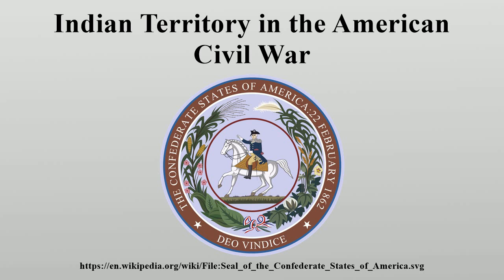Before the outbreak of war, the United States government relocated all soldiers in Indian Territory to other key areas, leaving the territory unprotected from Texas and Arkansas, which had already joined the Confederacy. The Confederacy took an interest, seeking a possible source of food in the event of a Union blockade, a connection to Western territories, and a buffer area between Texas and the Union-held Kansas. At the onset of war, Confederate forces took possession of the U.S. Army forts in the area. In June and July 1861, its officers negotiated with Native American tribes for combat support.